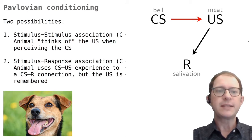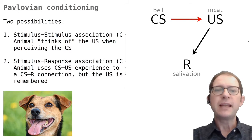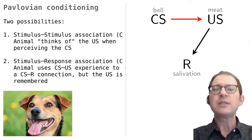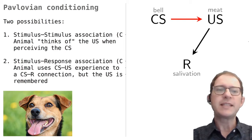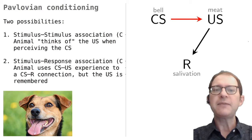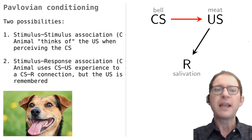In other words, the dog would be thinking: I hear the bell and I learned that meat comes after the bell, so it's a good idea to salivate. Of course, we don't mean that the dog literally thinks like this, just that somehow the sound of the bell activates a representation of the meat through the association, and this in turn activates the salivation response.